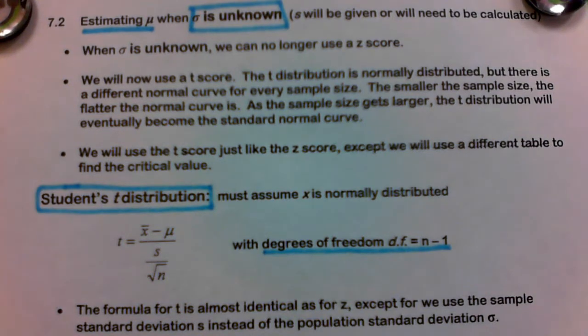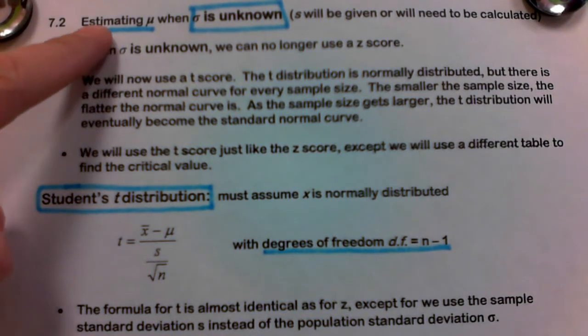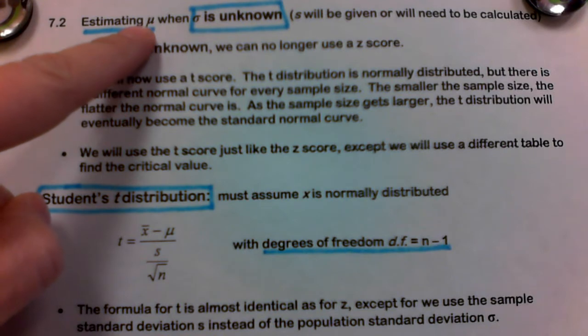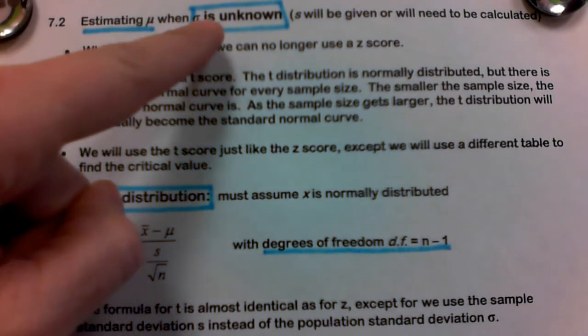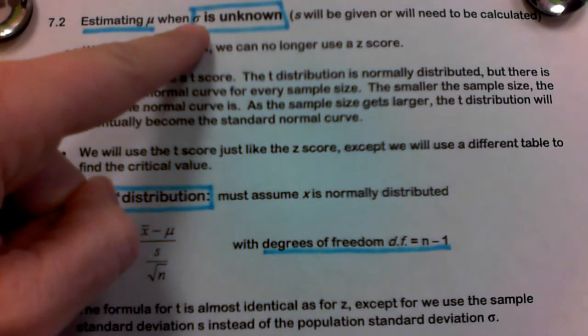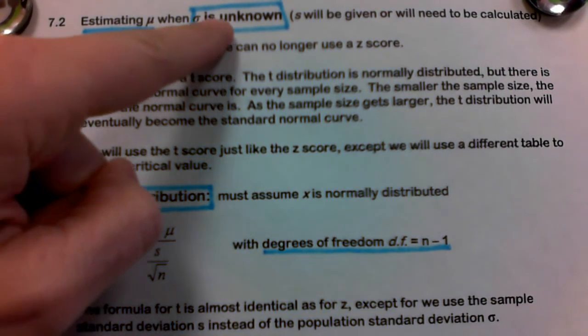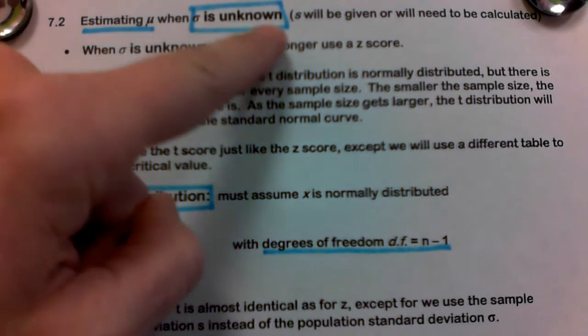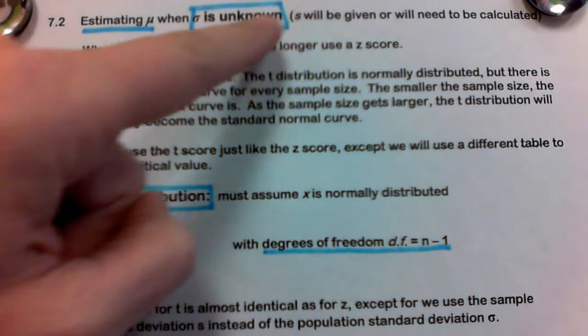In section 7.2, we're going to continue with estimating mu, but here's the big difference. Now sigma, the population standard deviation, is unknown. So S will typically be given. Sometimes you might need to calculate it, but typically it will be given.